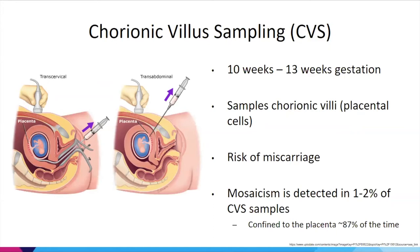With CVS, you're sampling the chorionic villi, which are placental cells — the same populations of cells as those tested in PGT. This procedure is attractive because it's earlier in the pregnancy, but that is a significant caveat in this setting. CVS does carry a risk of miscarriage. In general, mosaicism is detected in about 1 to 2 percent of CVS samples; in those instances, amniocentesis is typically recommended to clarify fetal status. That mosaicism will be confined to the placenta about 87 percent of the time.